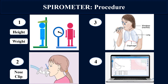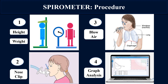In the third step, the patient is given a mouthpiece into which they will blow air, used for inhalation and exhalation. The lung volumes and capacities are then measured by the spirometer device. In the fourth step, results are obtained in the form of a graph. These graphs are analyzed to determine if the patient's lungs are functioning normally or if there are deviations indicating abnormality.